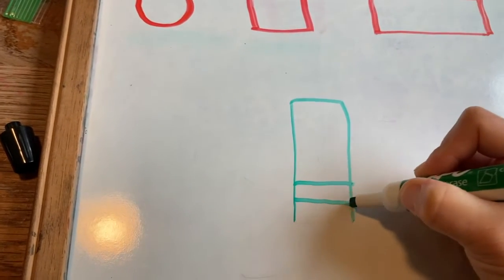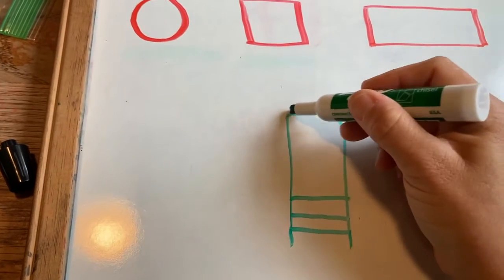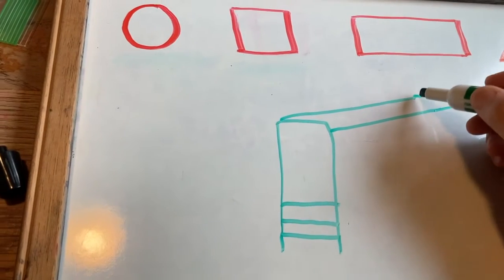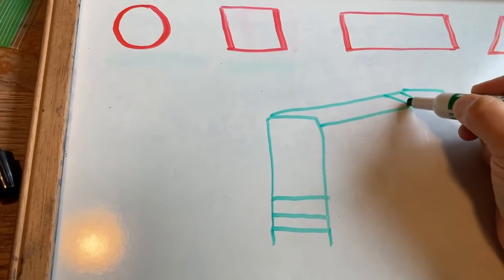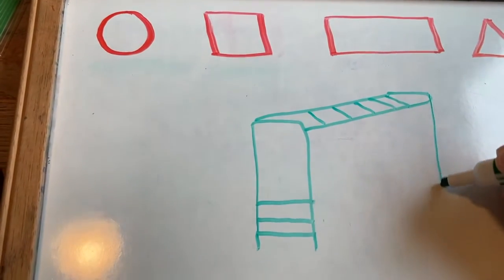It has stairs. Let me go down a little bit, and then it goes like this. And then it has bars across the top. Yes, it's the monkey bars.